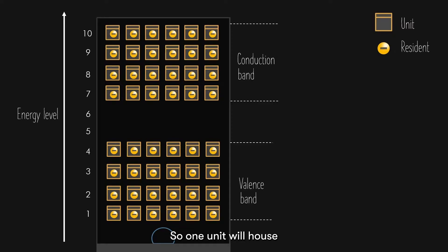So, one unit will house a maximum of one electron. For a semiconductor, there is no possibility for an electron to reside between the conduction and valence band. And hence, there are no units on the 5th and 6th floor. We call this the forbidden band.